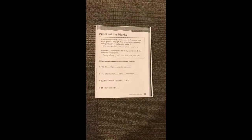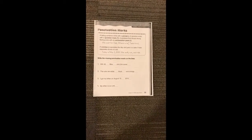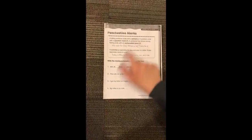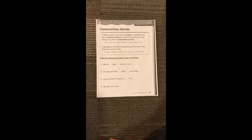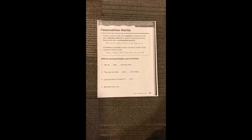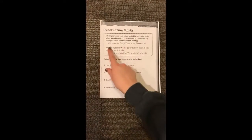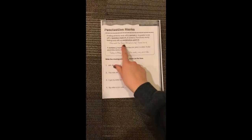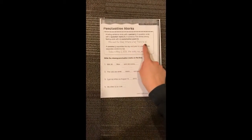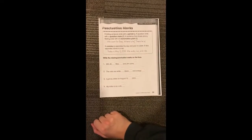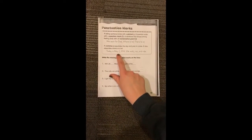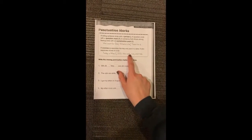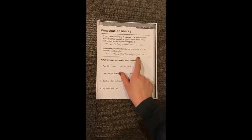Now we're going to be talking about some punctuation marks we use when we write. A telling sentence ends with a period. A question ends with a question mark. A sentence that shows strong feelings ends with an exclamation point. So here are some examples: We wait for dad. Where is he? There he is. A comma separates the day and year in a date, and it also separates words in a list. For example: Today is May 2nd, 2013. We walk, run, and ride.